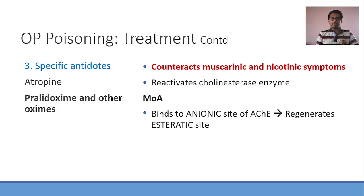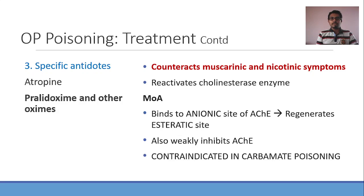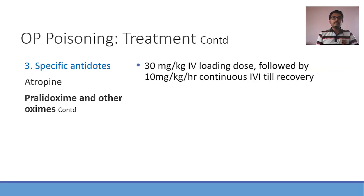Between OP compounds and carbamates: when OP compounds are ingested, they only block the esteratic site and leave the anionic site free. On the other hand, when carbamates are ingested, carbamates occupy both the esteratic and anionic sites. That is why you should not give pralidoxime if the patient has consumed a carbamate. There is another reason: pralidoxime itself has weak inhibitory action on the acetylcholinesterase enzyme. In carbamate poisoning, giving pralidoxime will not regenerate the cholinesterase enzyme but will worsen the condition. Because of these two reasons, pralidoxime and other oximes are absolutely contraindicated in carbamate poisoning.